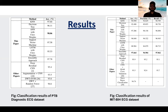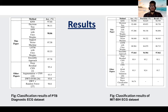We performed hyperparameter tuning. The best parameters for KNN were K=3 for the MIT-BIH Arrhythmia Dataset and K=1 for the PTB Diagnostic Dataset. For Decision Tree, the best results were achieved at depth 21 for the MIT-BIH Dataset and depth 43 for the PTB Dataset. For SVM, we used grid search and the best parameters were C=1 and gamma=1.